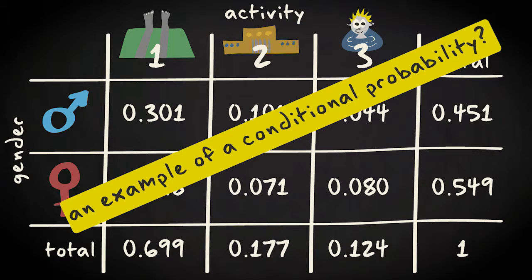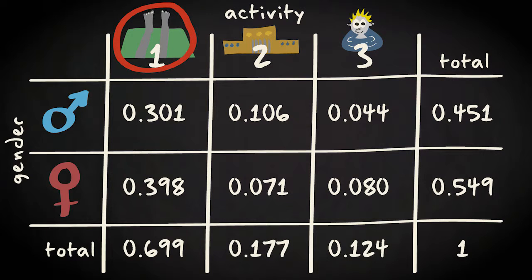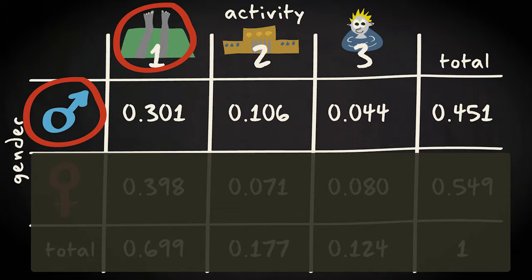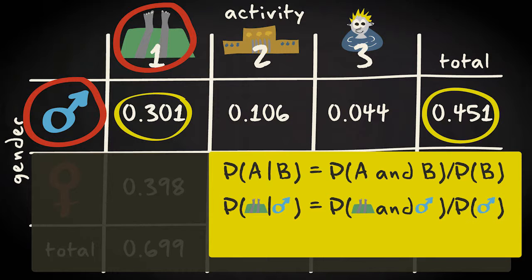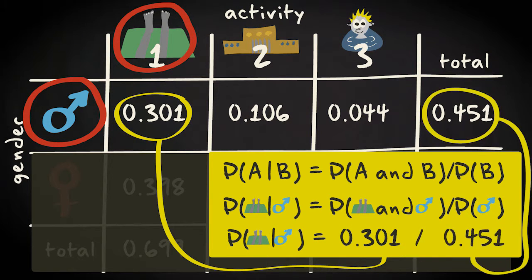Let's pick a concrete example. You would estimate the probability that a person is resting if you know that person is male. To calculate it, you would apply the equation and divide the joint probability of resting and male by the probability of male, hence 0.3 divided by 0.45.